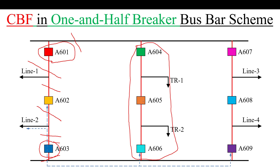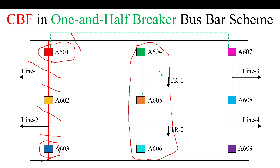For breakers such as A605 or A606 associated with a transformer bay, the tripping will not be extended to the remote end because this is a transformer bay — a local bay. If a breaker in this section fails to operate, the CBF relay will send tripping commands to A607, A601, and A605. The arrow indicating remote tripping applies only if the bay is a transmission line; if it is a transformer and locally available, tripping is not extended remotely, since the transformer will already be isolated.